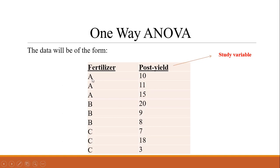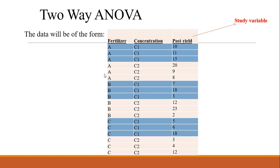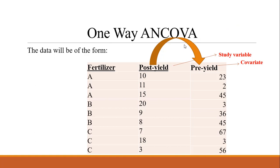In the factor column, the treatment names are repeated according to the replications of each treatment. Here, three treatments each have three replications — Treatment A, Treatment B, and Treatment C each have three replications. In two-way ANOVA, there are two factors: fertilizer and concentration. So for two-way ANOVA, we write three columns — the first two for the factors, and the last column for the study variable.